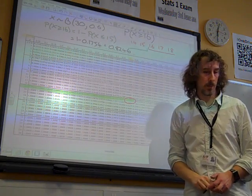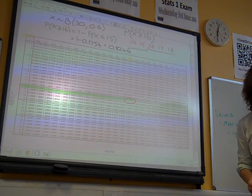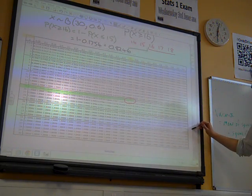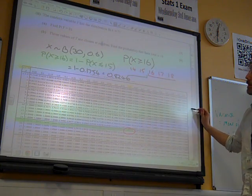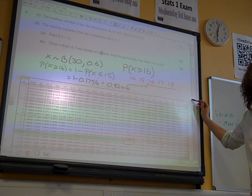I think, would that be right? There we go. Just two marks for doing that because it was just looking at the value in the table. It then says, part two, the random variable y is distribution b4 0.7.